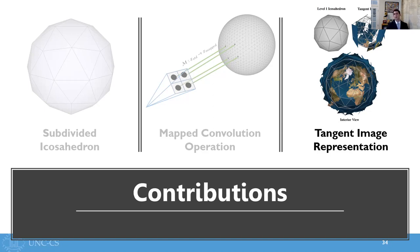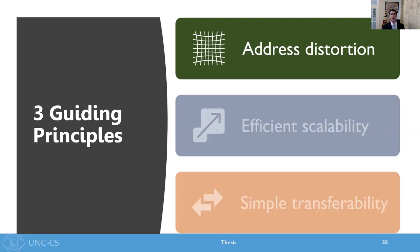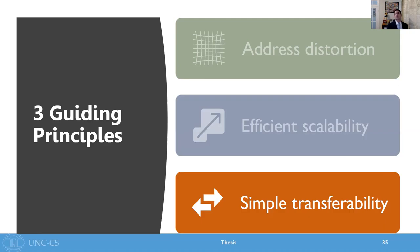But before we start talking about the specific solutions, let's set the stage for what the general solution should look like. Any solution to the spherical image problem should satisfy three characteristics. It should address distortion, scale efficiently, and permit the easy transfer of existing algorithms to 360 data. Now distortion mitigation is necessary for the reasons we've already talked about: content deformation, translational equivariance, and the performance gap. Efficient scalability is key for 360 images as well. Finally, computer vision has nearly half a century of existing work, and any solution for 360 images ought not to reinvent the wheel — they should facilitate the simple transfer of existing algorithms to 360 images.